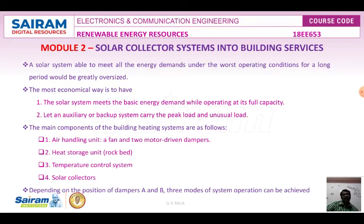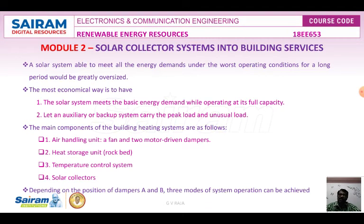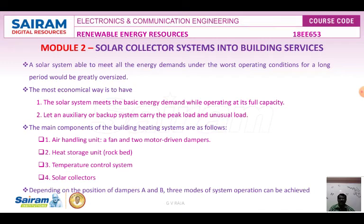Here we are going to look at the solar air heating system — how solar energy is used for space heating of a room or building. The most economical approach is for the solar system to meet basic energy demand while operating at full capacity, with an auxiliary or backup system to handle peak and unusual loads. The main components of the building heating system are the air handling unit, heat storage unit, temperature control system, and solar collectors.